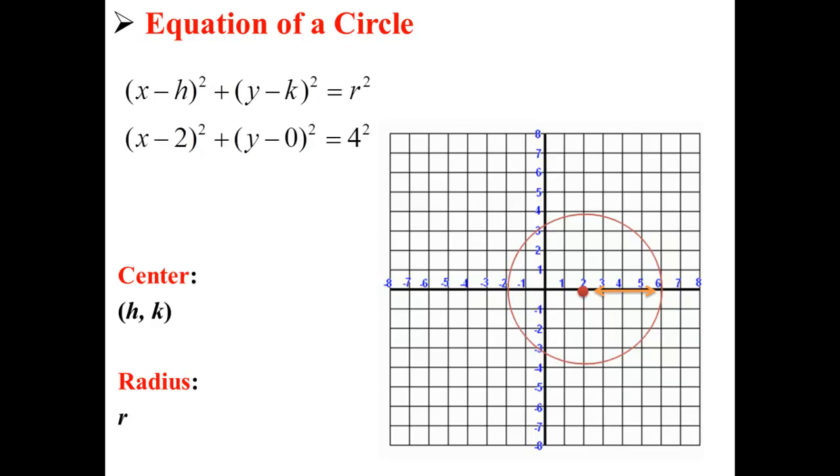So, the equation of this circle in standard form would be (x - 2)² + (y - 0)² = 4².